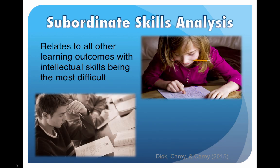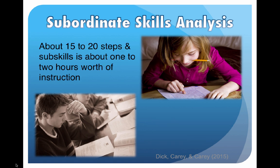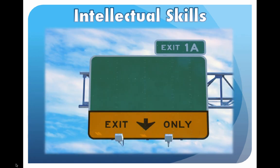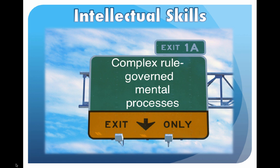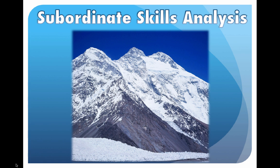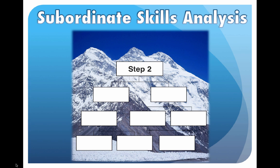A subordinate skills analysis is what we do with all of the other learning outcomes, with intellectual skills being the most difficult. No analysis looks the same, just as lessons on the same topic might look different. About 15 to 20 steps and sub-skills is worth about one to two hours of instruction. This process can be quite a brain teaser, depending on the complexity of the topic. A subordinate skills analysis starts with each step and breaks it down into all the sub-skills that it takes to achieve the step.